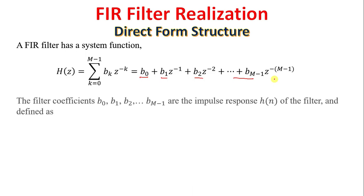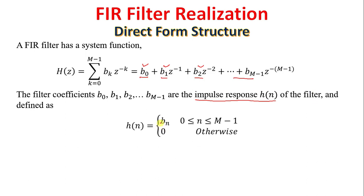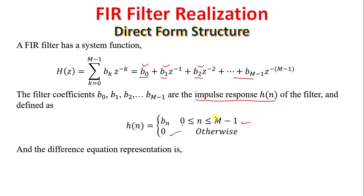The filter coefficients B0, B1, B2, and so on are also known as the impulse response h(N) of the filter, defined as h(N) equals b(N) for N from 0 to M minus 1, and zero otherwise. Here k equals 0 to M minus 1.